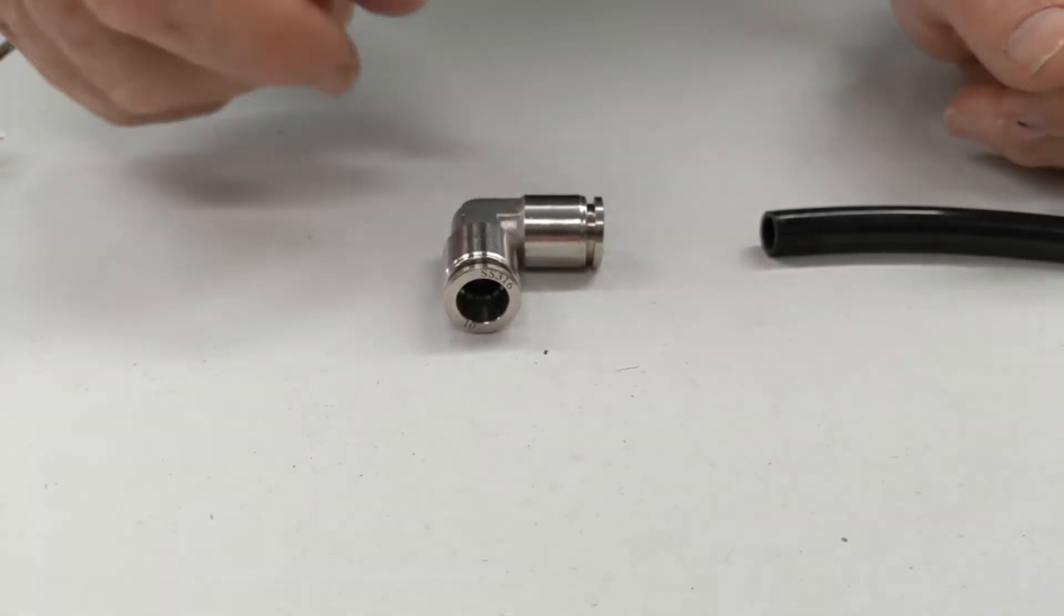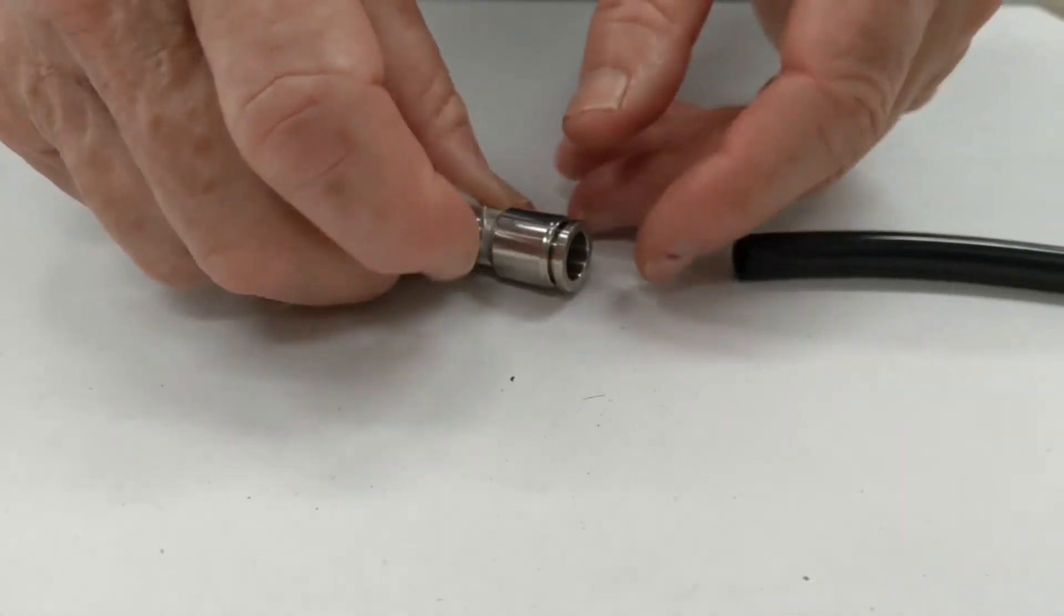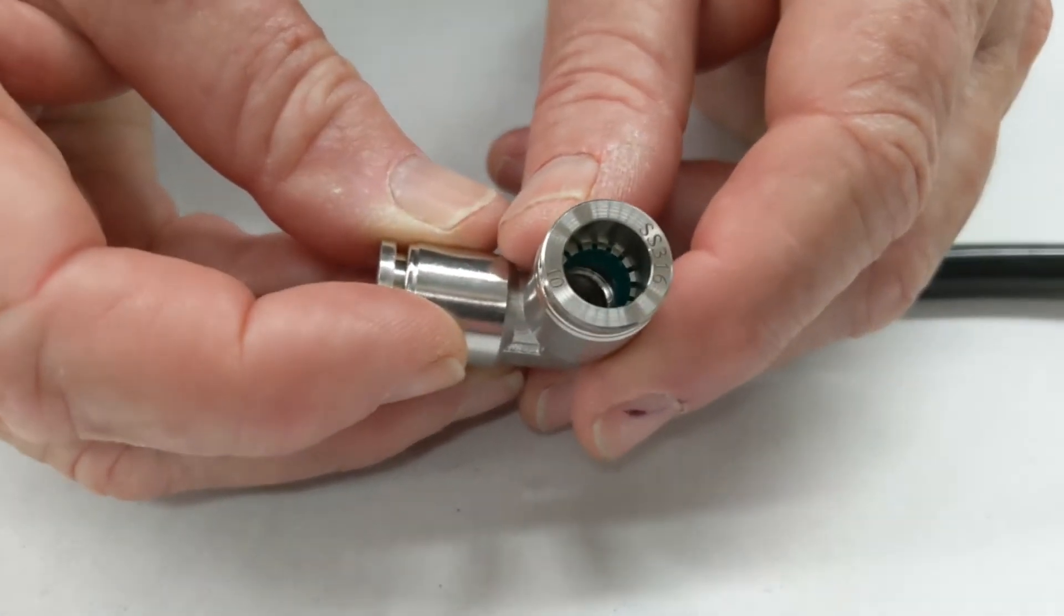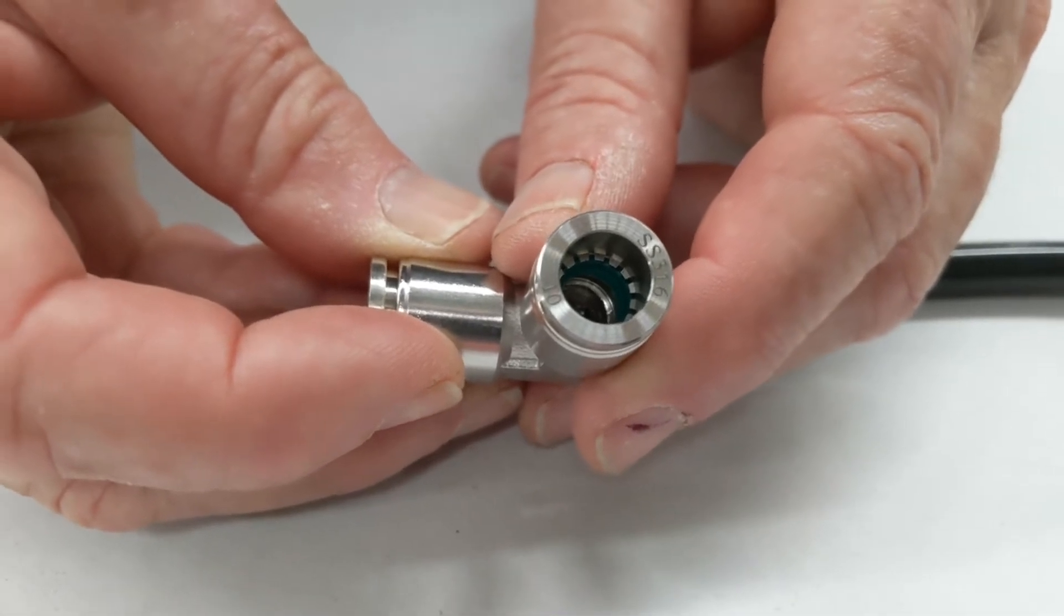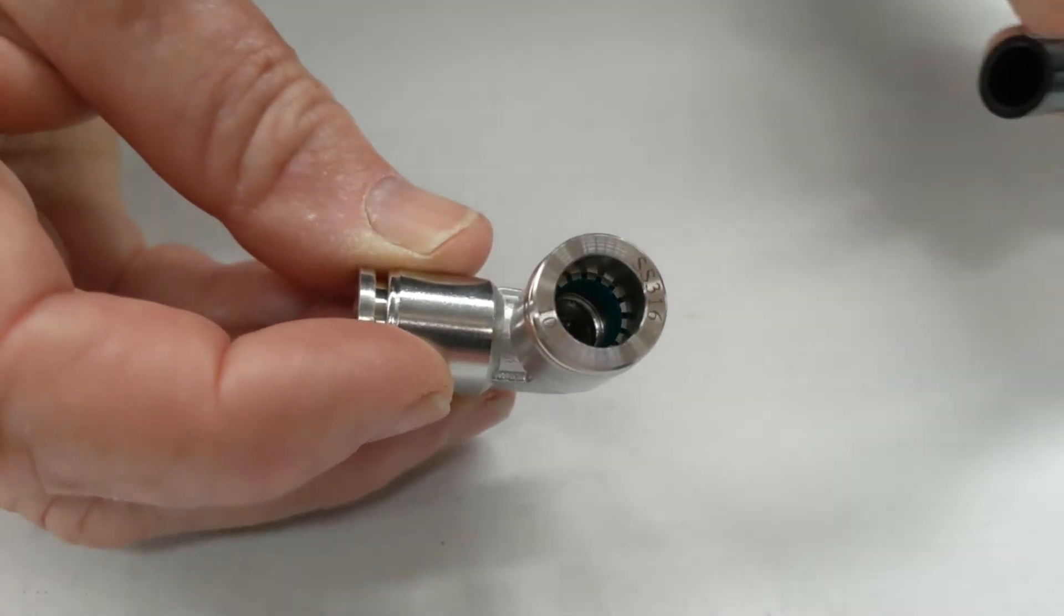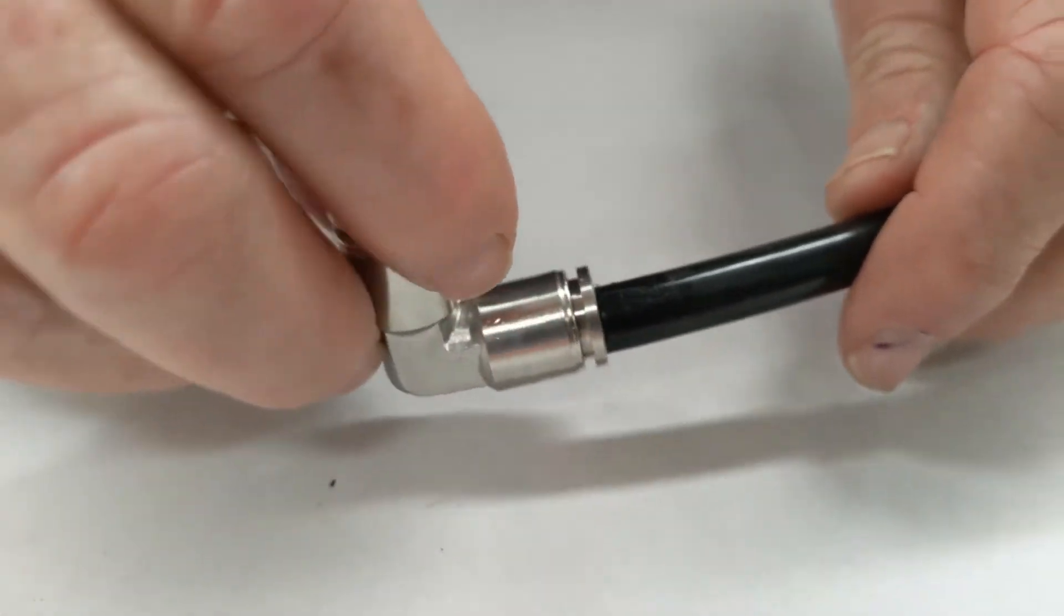They're a collet-based unit. If I just put that there, you can see the green o-ring down inside and the stainless steel collets. How this works is you push the tube in and push it down hard. That locks into the collet.